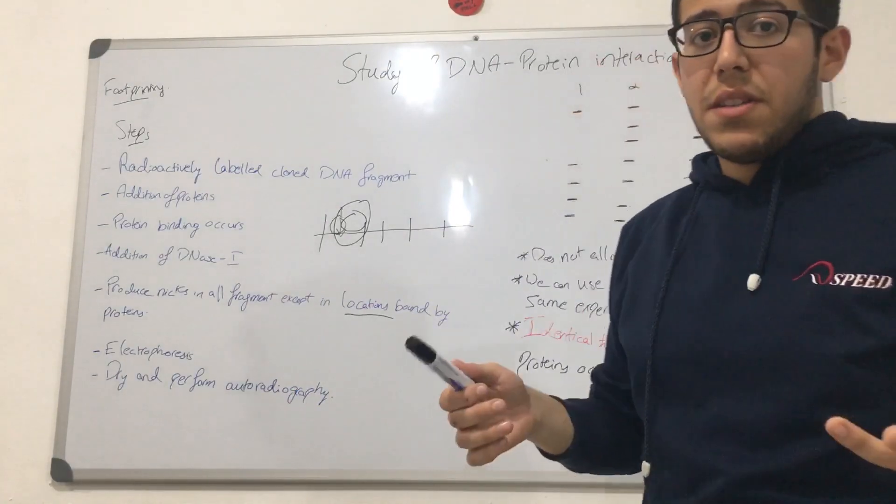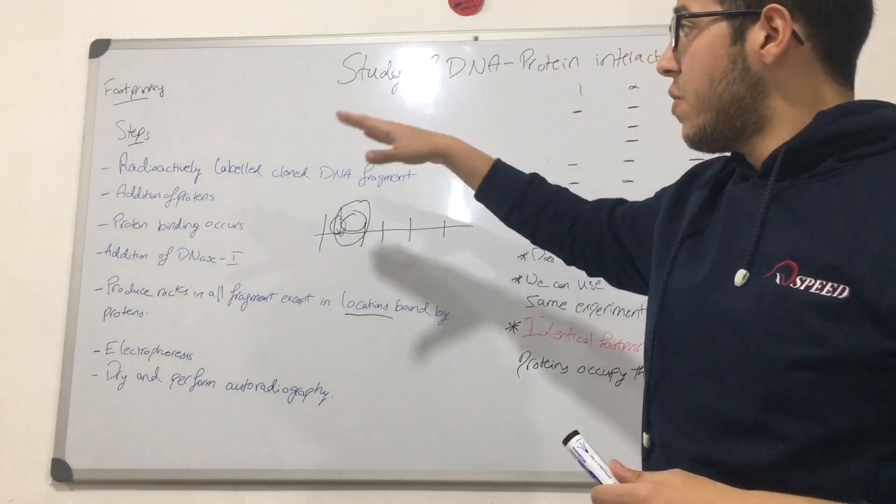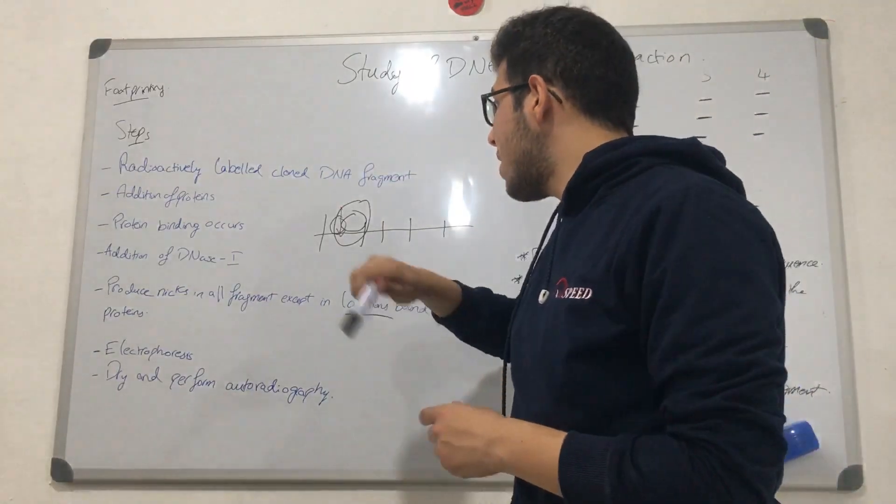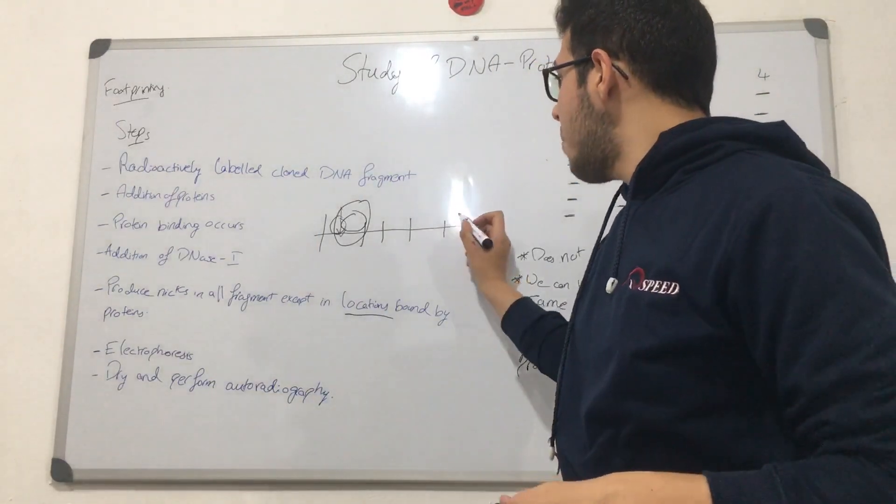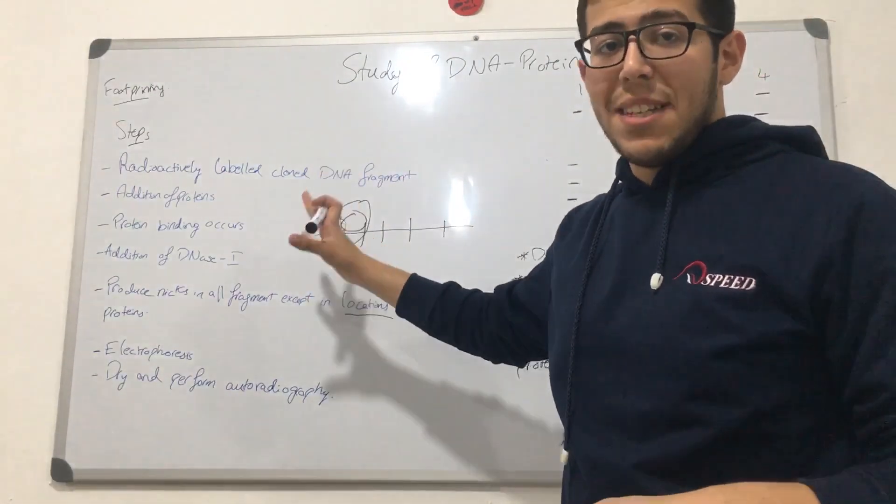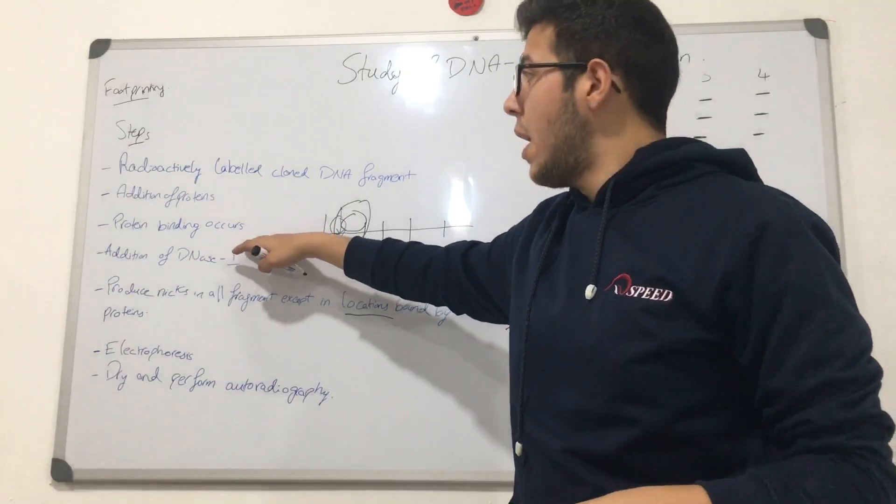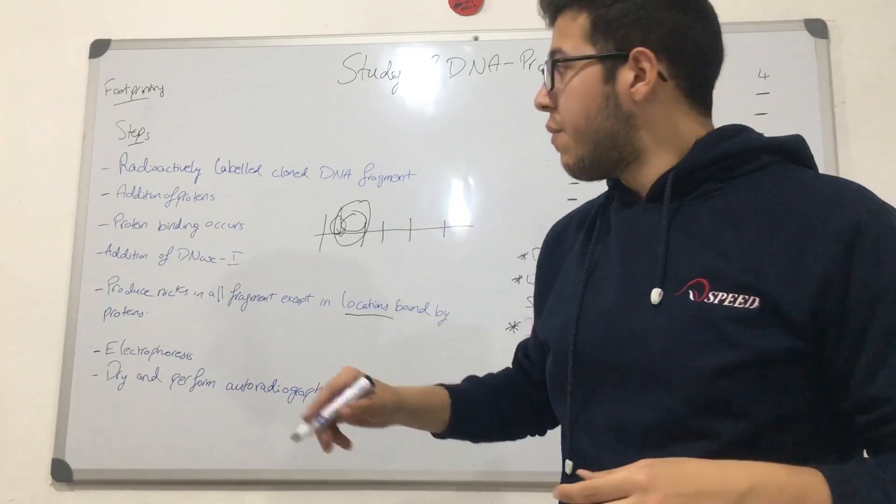First, we're going to be taking a radioactively-labeled cloned DNA fragment, and then we're going to be adding proteins. These proteins are going to be binding on top of this DNA fragment. Obviously, this is double-stranded, but we drew it as single-stranded for simplicity. After that, we're going to be leaving it for a while to allow these proteins to bind on this double-stranded fragment.